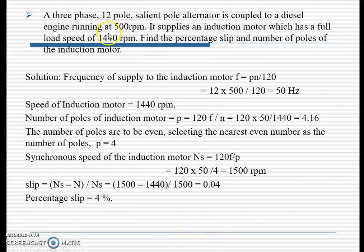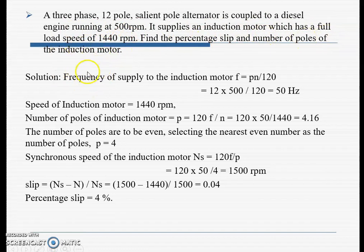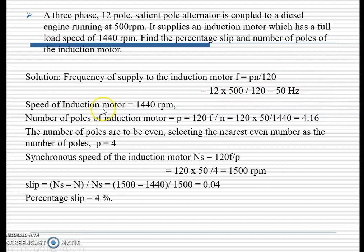Another numerical: A 3-phase, 12-pole alternator is coupled to a diesel engine running at 500 rpm. It supplies an induction motor which has a full-load speed of 1440 rpm. Find the percentage slip and number of poles of the induction motor. First, find the frequency: f = P·n / 120 = 12 × 500 / 120 = 50 Hz.